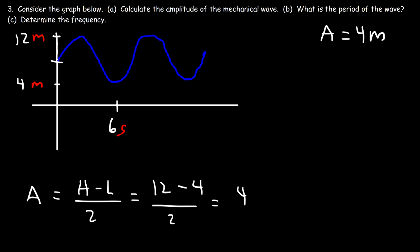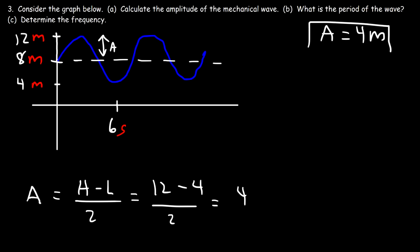The midpoint between 4 and 12 is 8. If you add 12 plus 4, you get 16 divided by 2, which is 8. As mentioned before, the amplitude is the distance between the center line and the highest point. So 12 minus 8 is 4, and that gives us the same answer.